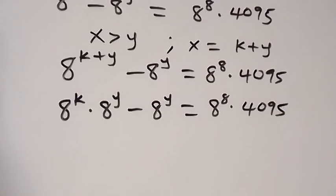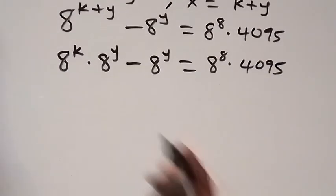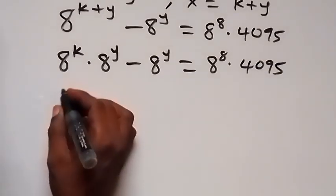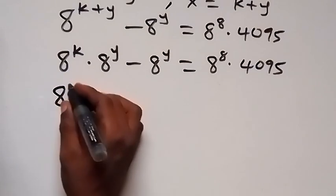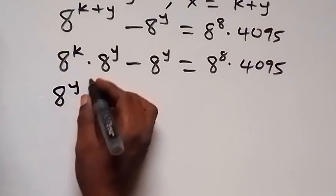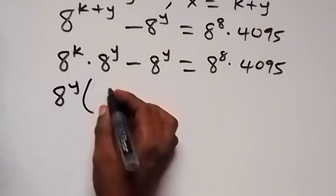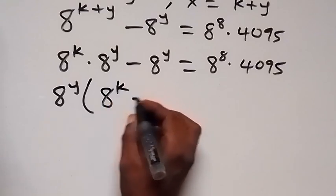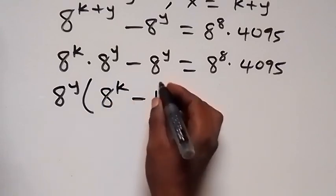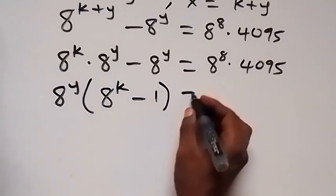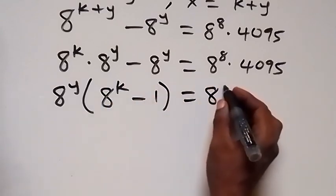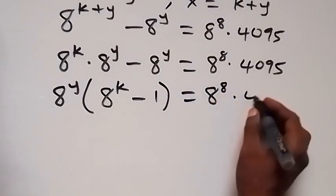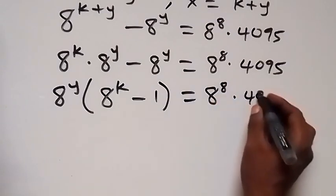Then in the next step, we have 8 raised to power y common. Let's take it out. We have 8 raised to power y factored out, and what remains inside is 8 raised to power k minus 1, which is equal to 8 raised to power 8 times 4095.